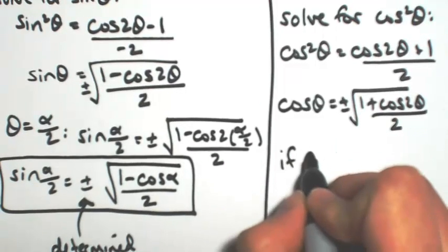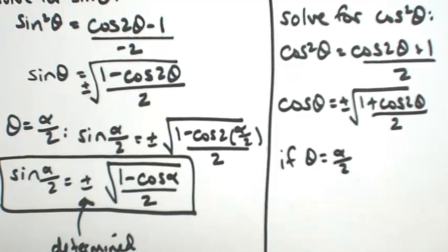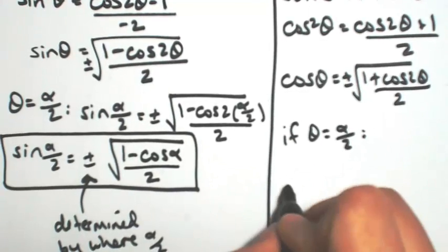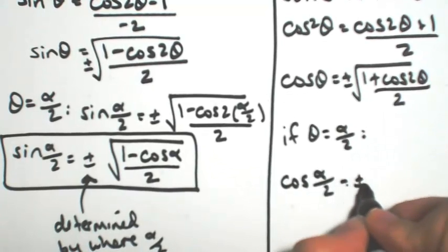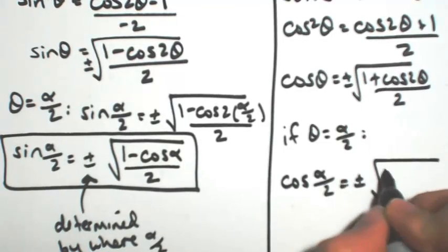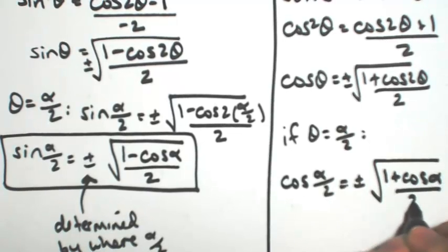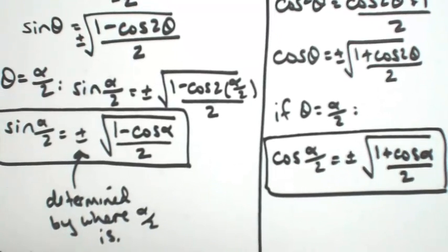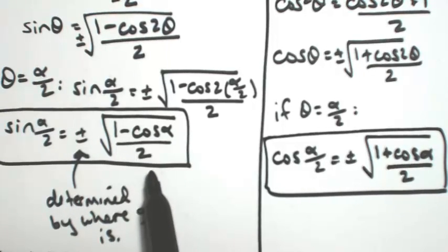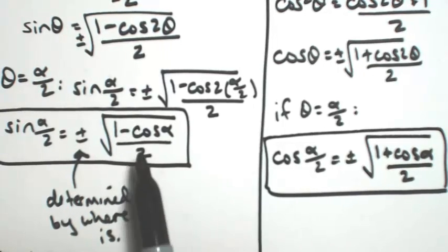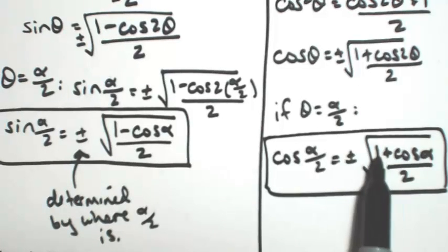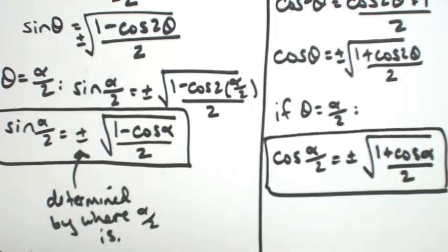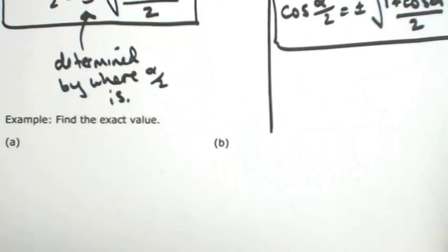And if theta is the half-angle alpha over 2, the same substitution happens. So the cosine of alpha over 2 equals plus or minus the square root of 1 plus cosine of alpha, all over 2. Notice the big similarities: it's plus or minus, square root, a 1, a cosine, and all over 2. The only difference is that sine uses subtraction and cosine uses addition. Again, plus or minus is determined by where alpha over 2 is.